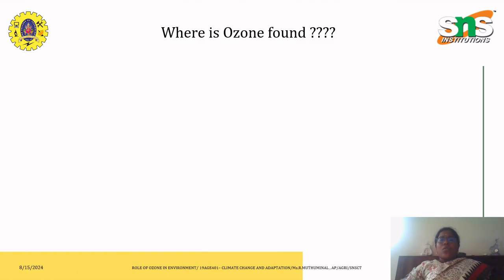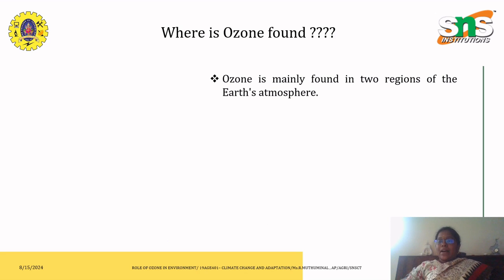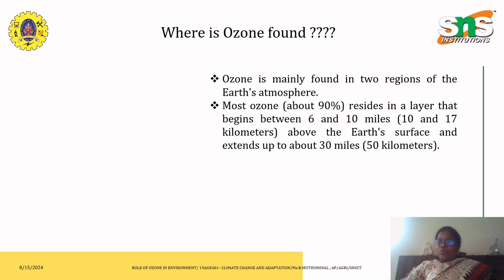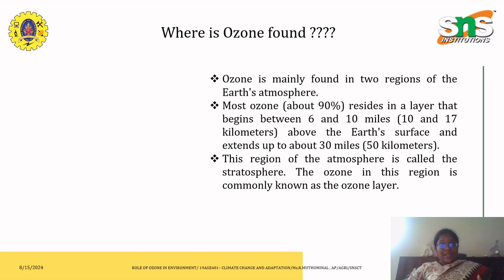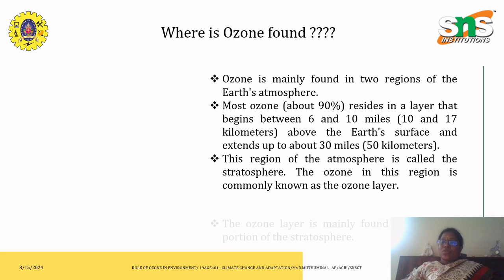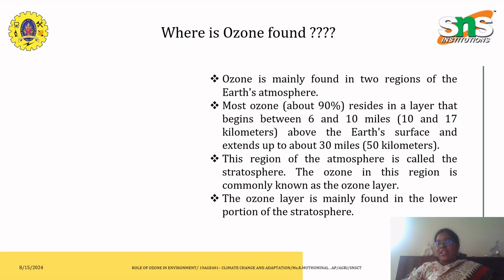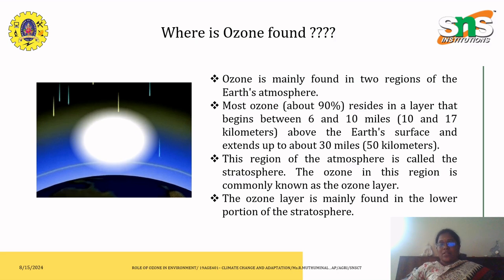This ozone is found at two regions of the Earth's atmosphere. Most ozone resides in a layer that begins between 6 to 10 miles above the Earth's surface and extends up to 13 miles, that is up to 50 kilometers. This region of the atmosphere is usually denoted as the stratosphere, and the ozone in this region is commonly known as the ozone layer, which is mainly found in the lower portion of the stratosphere.